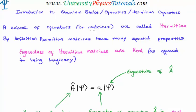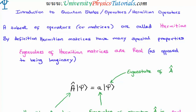Now of all the types of operators, matrices, or functions that you could possibly have, some of them are known as Hermitian operators, functions, or matrices, because they behave in a particular type of way. By definition, Hermitian operators, matrices, or functions have some very special properties and they're very useful in quantum mechanics. One of the most important properties of a Hermitian operator is that the eigenvalues associated with it are real, as opposed to being imaginary. So if you have a particular operator and it gives you back a real eigenvalue, it's potentially Hermitian — it satisfies one of the criteria in order for it to be a Hermitian operator or matrix.